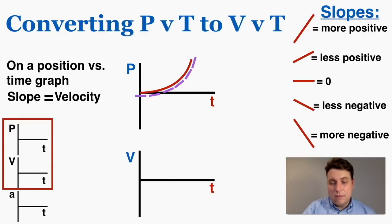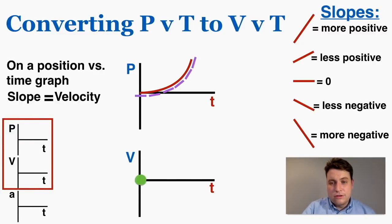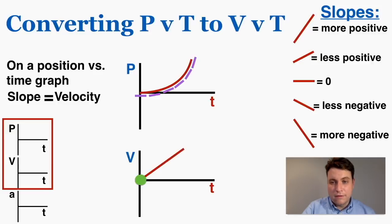From the graph, I can see that the first tangent line I draw is flat, so the slope starts off at zero, meaning the velocity starts at zero. Then the slope becomes more and more positive, so the velocity becomes more and more positive over time. That is what the velocity graph would look like for that curved position line, found using those tangent lines.